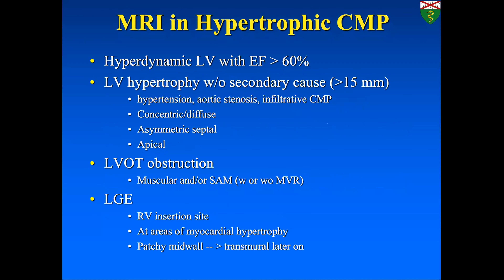In hypertrophic cardiomyopathy we normally see a hyperdynamic left ventricle with ejection fraction above 60%, LV hypertrophy, and must exclude other causes like hypertension, aortic stenosis, or infiltrative cardiomyopathy. It can be concentric diffuse, asymmetrical septal, or apical. MRI can also show the abnormal flow dynamics, including muscular obstruction of the LVOT, and systolic anterior motion (SAM) of the mitral valve, which can lead to mitral regurgitation and LVOT obstruction. The classic LGE pattern is at RV insertion points and within areas of myocardial hypertrophy — usually patchy mid-myocardial, but can progress to transmural.